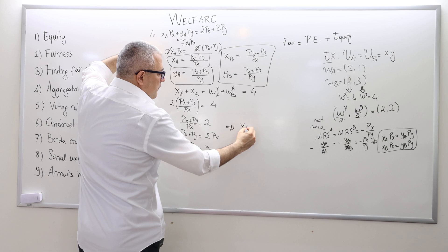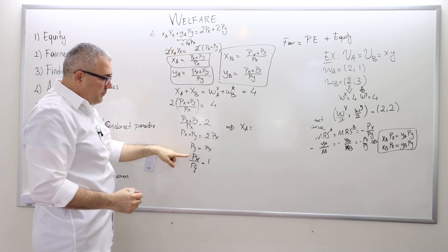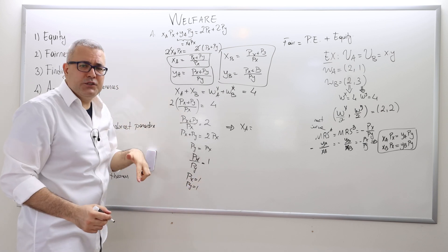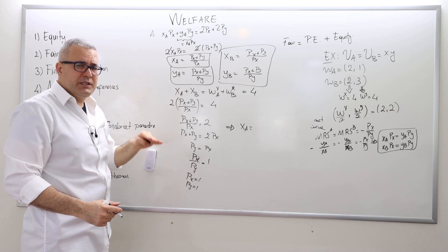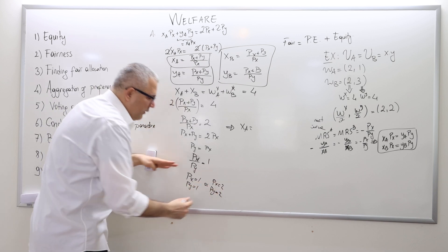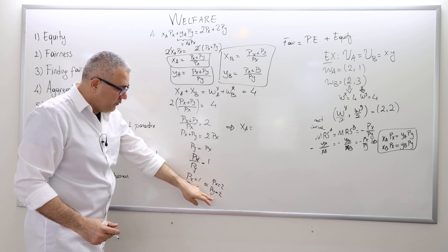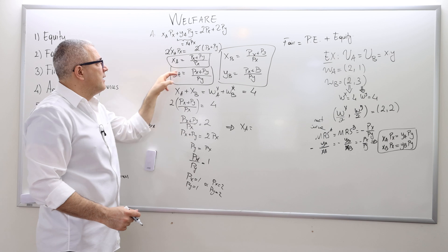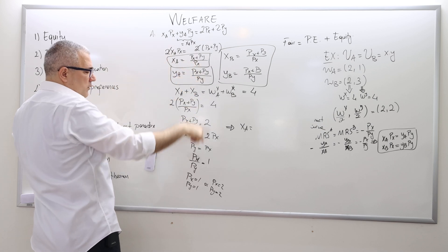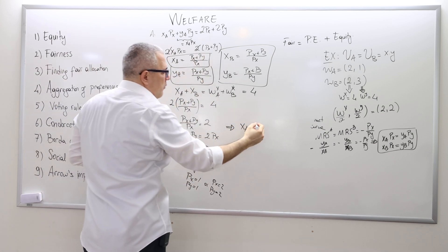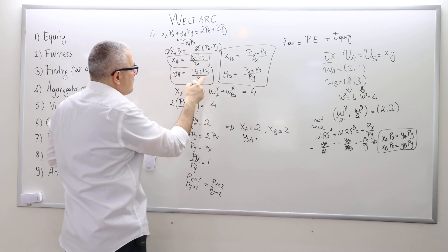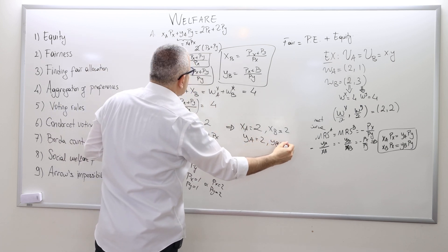So the equilibrium price ratio is 1. Think of PX as 1 and PY as 1 — or PX equals 2 and PY equals 2. As long as the PX/PY ratio is 1, those are all equilibrium prices. Whether you plug in (1,1) or (2,2), you get the same x and y values. Plugging in PX=1 and PY=1: XA equals 2, XB equals 2, YA equals 2, and YB equals 2.